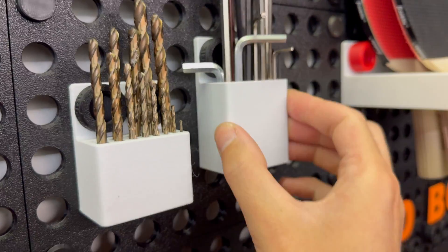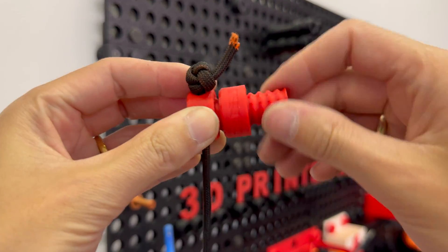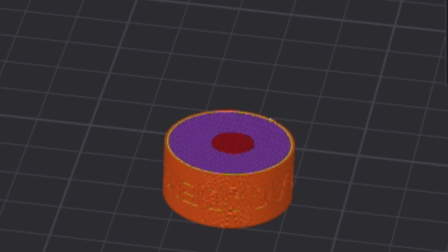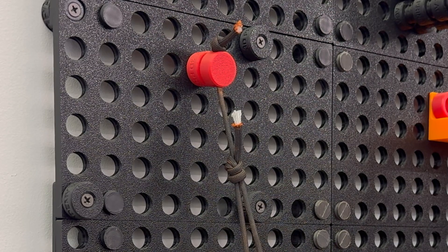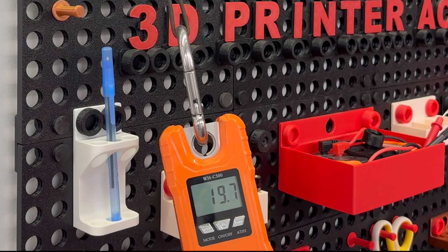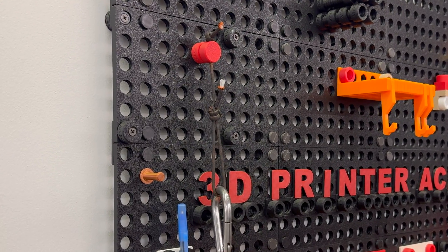Now you may be wondering to yourself, how strong are these threaded pegs? Let's go ahead and find out. So here I have two 100% infill threaded pegs, and I'm pulling on them over 20 kilograms, and they didn't even break.